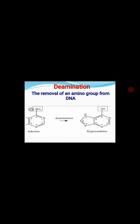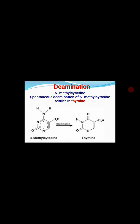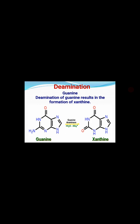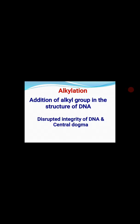In deamination, we saw that adenine deaminated gives hypoxanthine, cytosine gives thymine, and guanine gives xanthine. We discussed the mispairing — the alteration in base pairing properties. Alkylation was also discussed in detail.